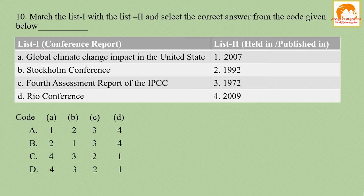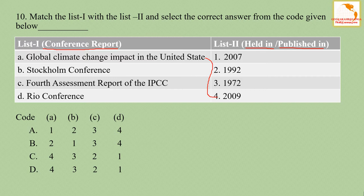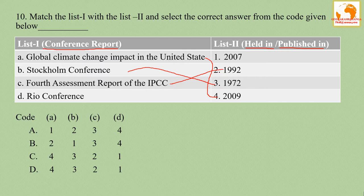Question number ten: match the conference report with the year it was held or paper published. Global Climate Change Impact on the United States was published in 2009; the Stockholm Conference was held in 1972; the Fourth Assessment Report of the IPCC was published in 2007; and the Rio Conference was held in 1992. The correct answer is option D.